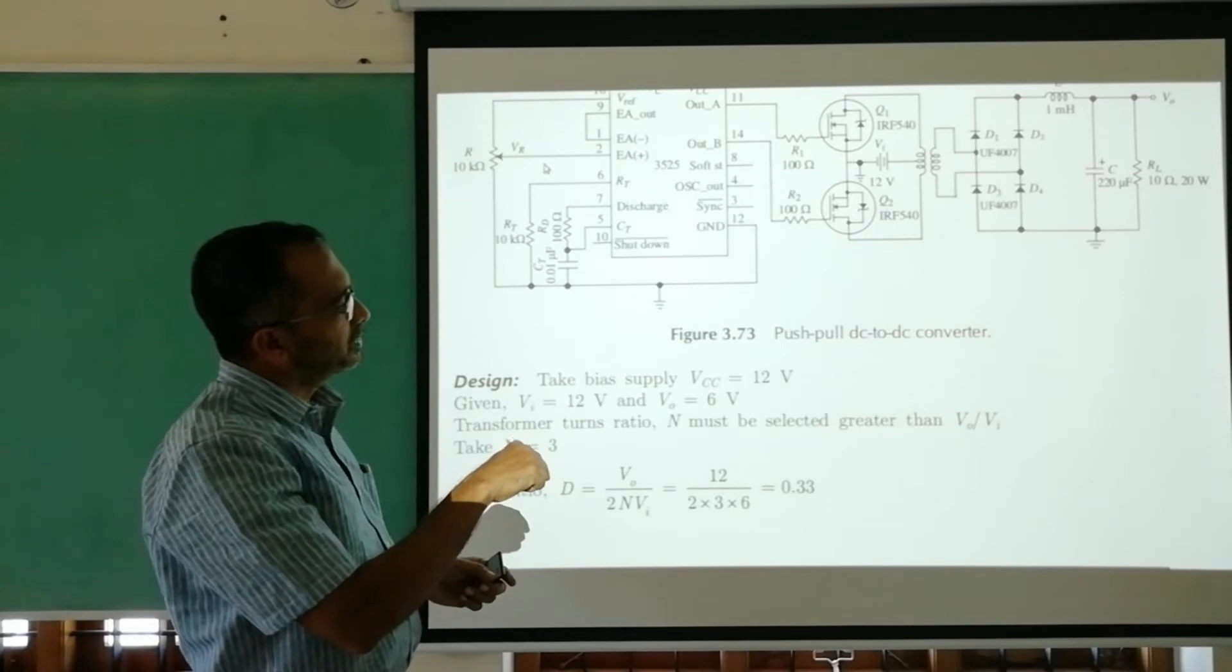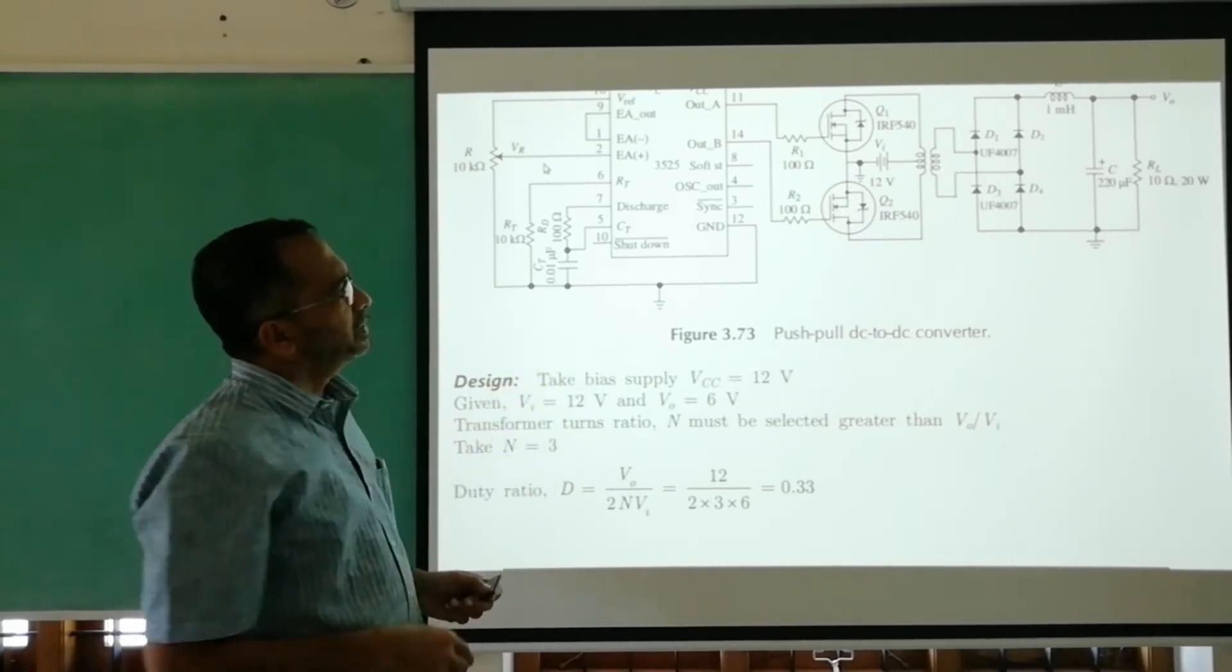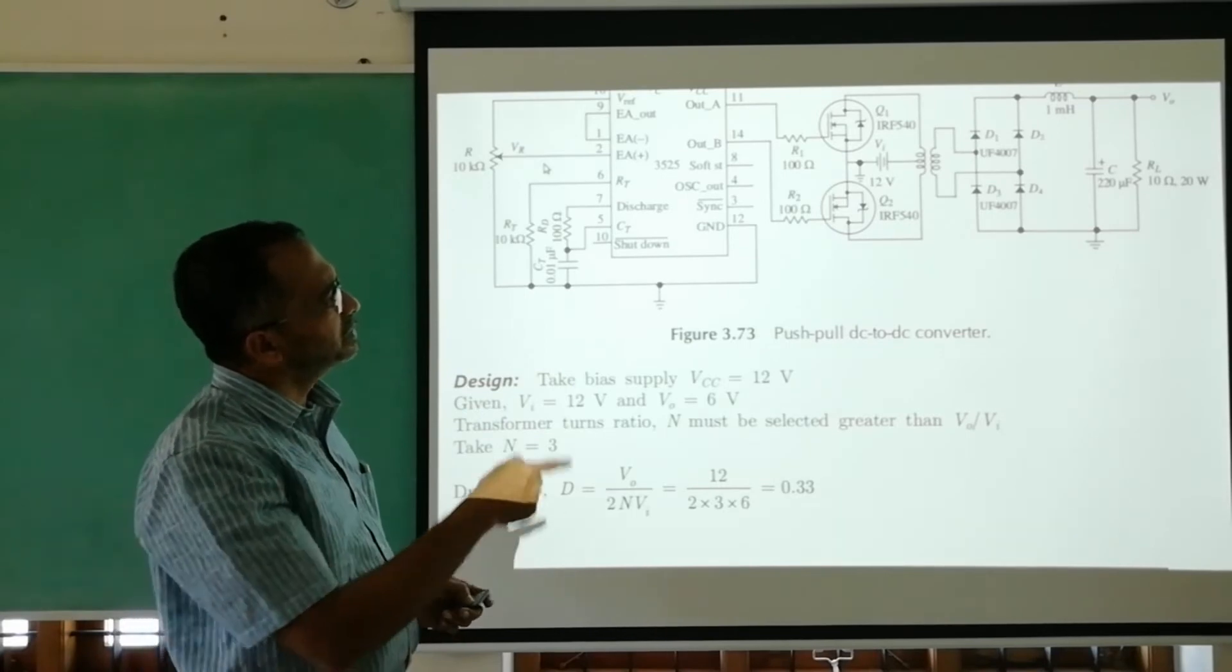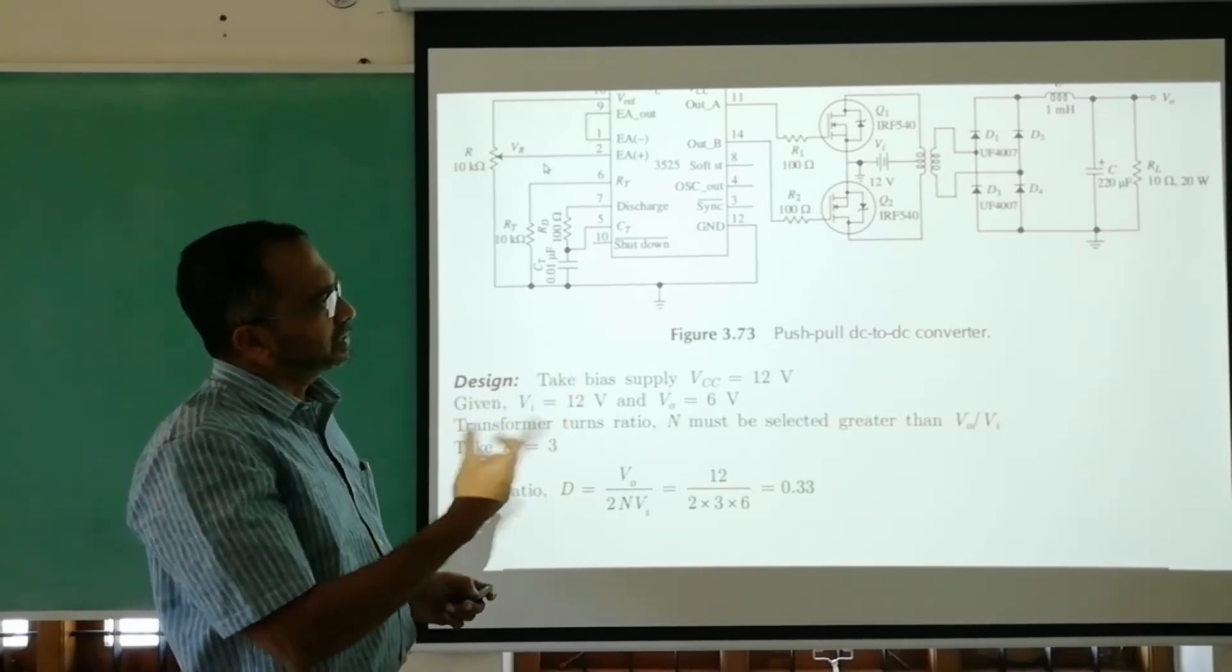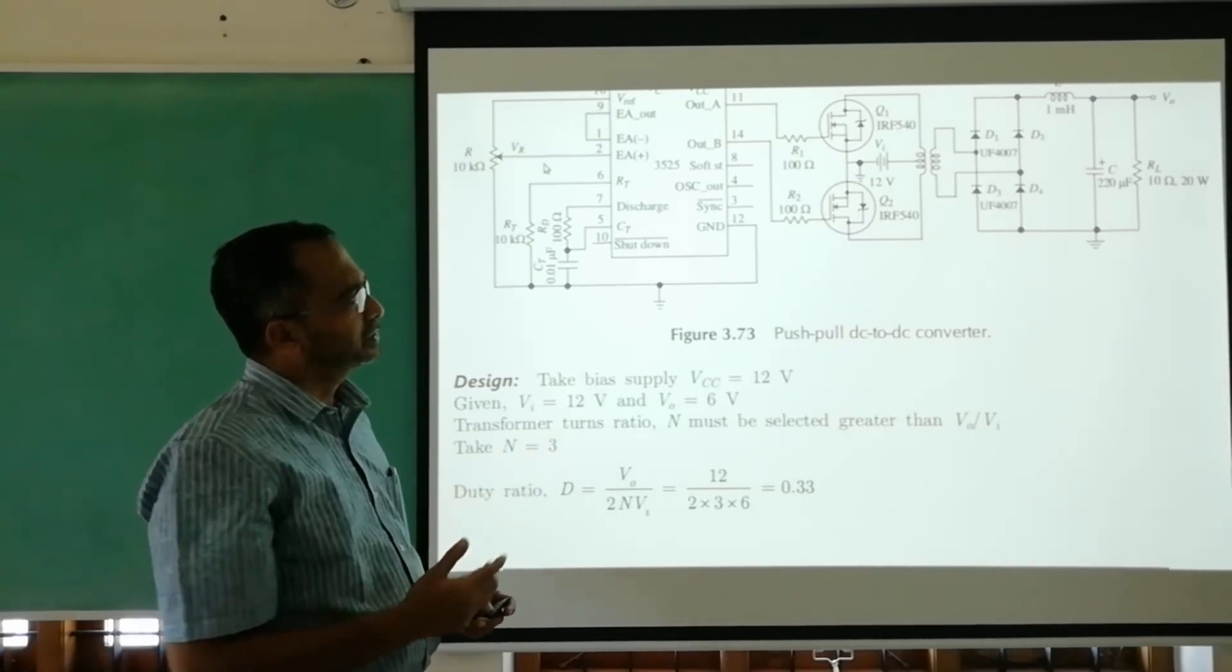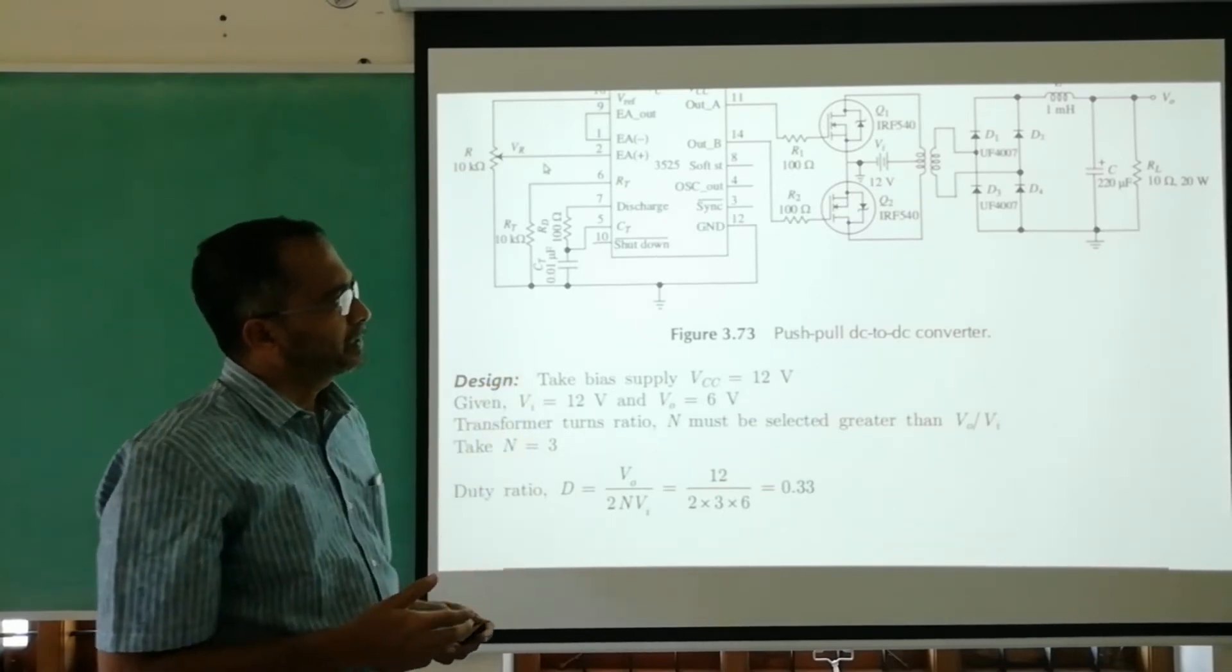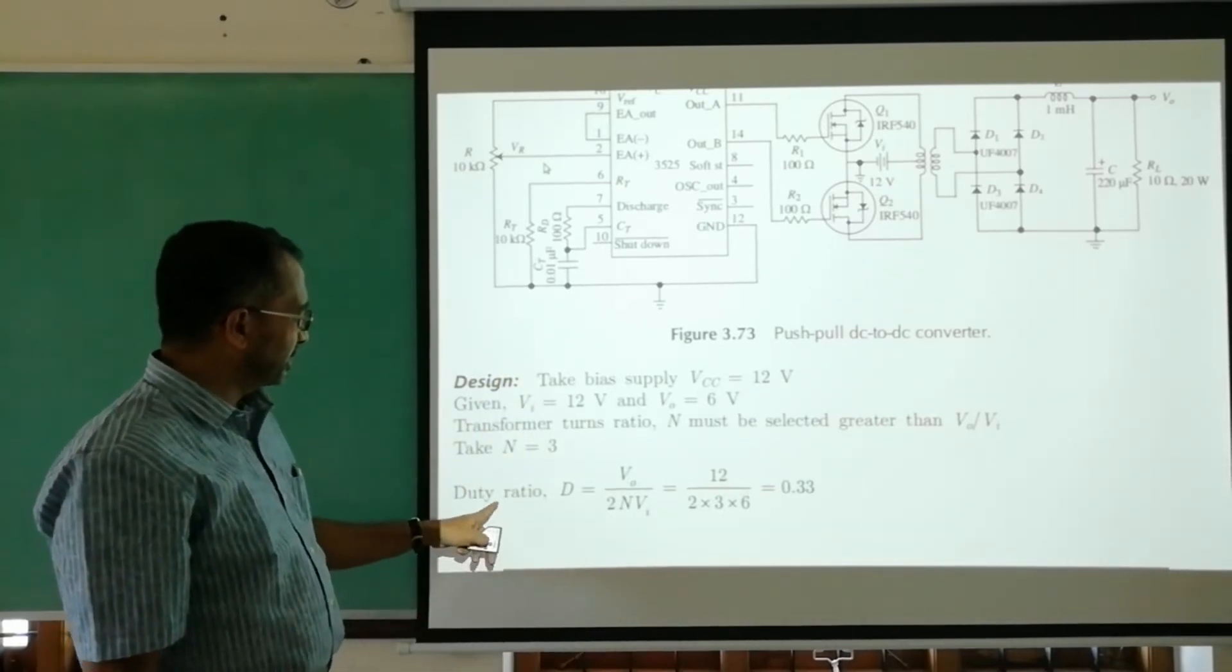When Q2 turns on, Q1 will be turned off because the inputs from pins 11 and 14 are complementary. Either of the transistors will be on. When Q2 turns on, 12 volts will be available across the lower half of the secondary, giving more than 6 volts at the output which gets rectified.